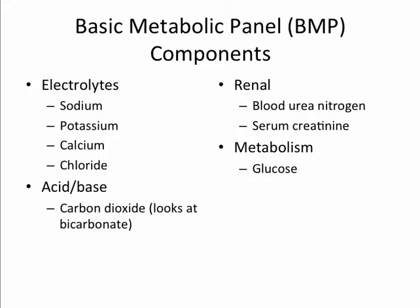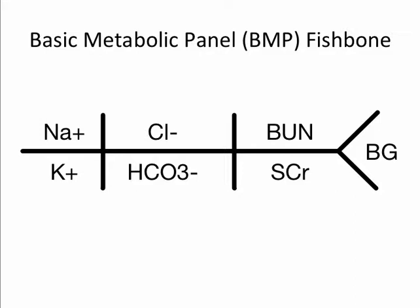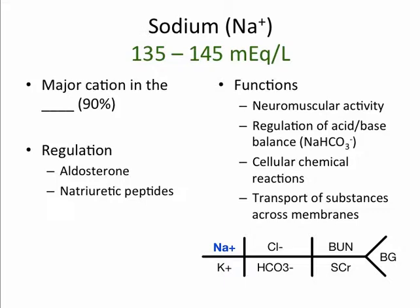Next, we will discuss the basic metabolic panel. The basic metabolic panel looks at the electrolytes sodium, potassium, calcium, and chloride. It also looks at acid-base balance with carbon dioxide. In addition, the basic metabolic panel provides information about the kidneys, and it also sheds light on metabolism or the endocrine system with blood glucose. Sodium is the major cation in the extracellular fluid and is regulated by aldosterone and natriuretic peptides. Sodium functions in neuromuscular activity, regulation of acid-base balance as with sodium bicarbonate, cellular chemical reactions, and transport of substances across membranes.